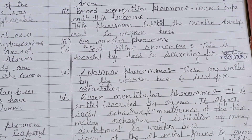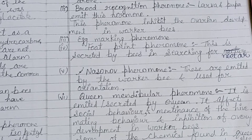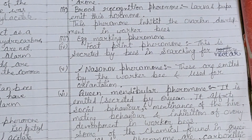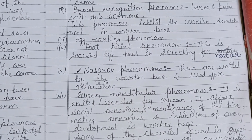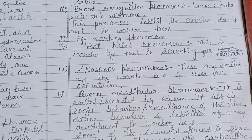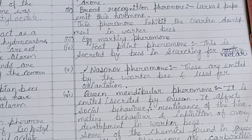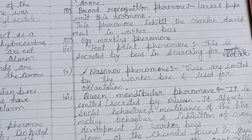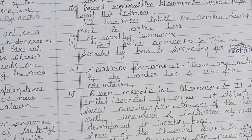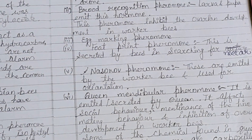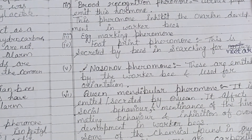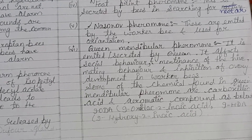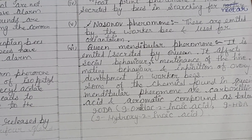The footprint pheromone is secreted by bees searching for nectar. In the case of the queen, it is an oily secretion from the queen's tarsal glands, deposited on the comb as she walks across it. This inhibits queen cell construction, thereby inhibiting swarming, and it diminishes as the queen ages.